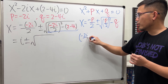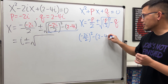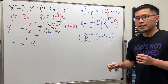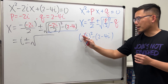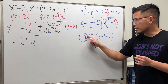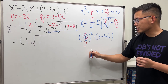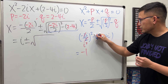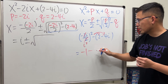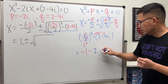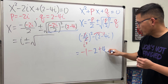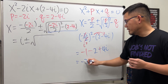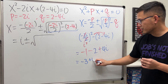Inside: negative 2i over 2, squared, minus 2 minus 4i. The 2s cancel, so we get negative i squared, but negative squared is positive and i squared is negative 1, giving negative 1. Then distributing the negative: minus 2 and then negative negative gives plus 4i. So the inside is negative 1 minus 2 plus 4i, which equals negative 3 plus 4i.